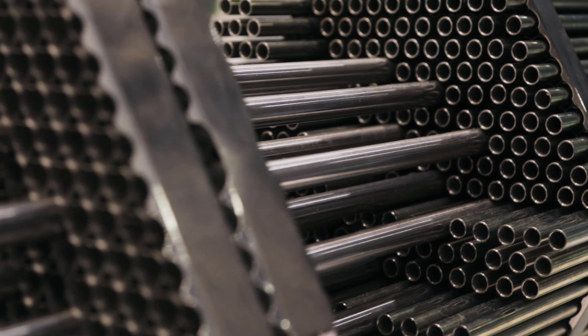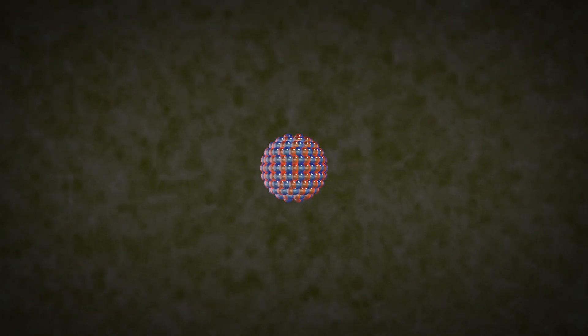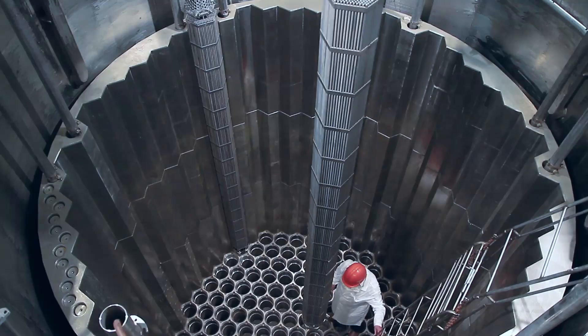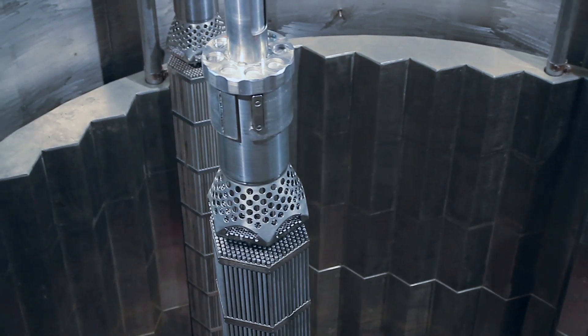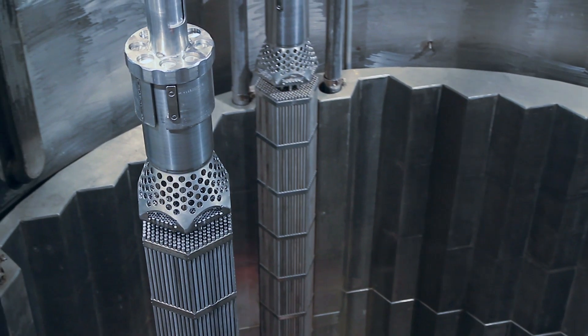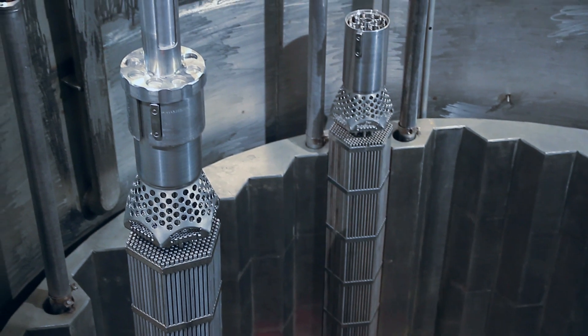Fuel elements are thin rods filled with fuel pellets, and thus the target of neutrons released according to careful calculations. The number of rods, which may be thousands, determines the size of the reactor and its generating capacity.